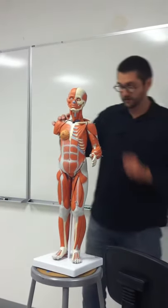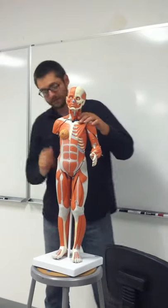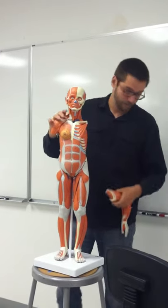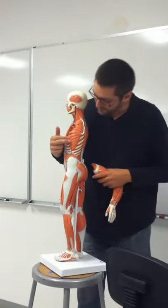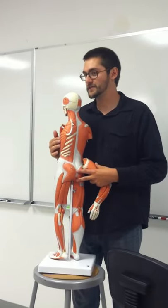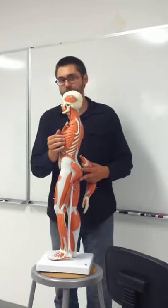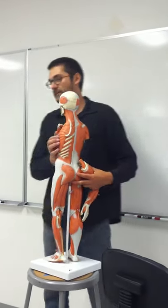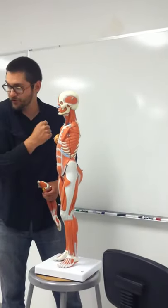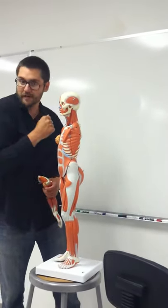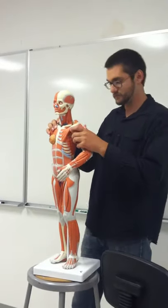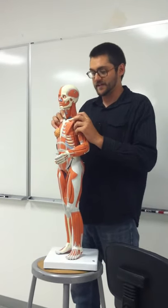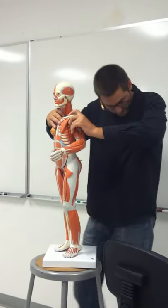There's another muscle called serratus anterior. You can see it better with the arm removed. The muscle fibers look like the edge of a serrated knife — that's serratus anterior. It attaches to your scapula and protracts the scapula. That's it for that group.